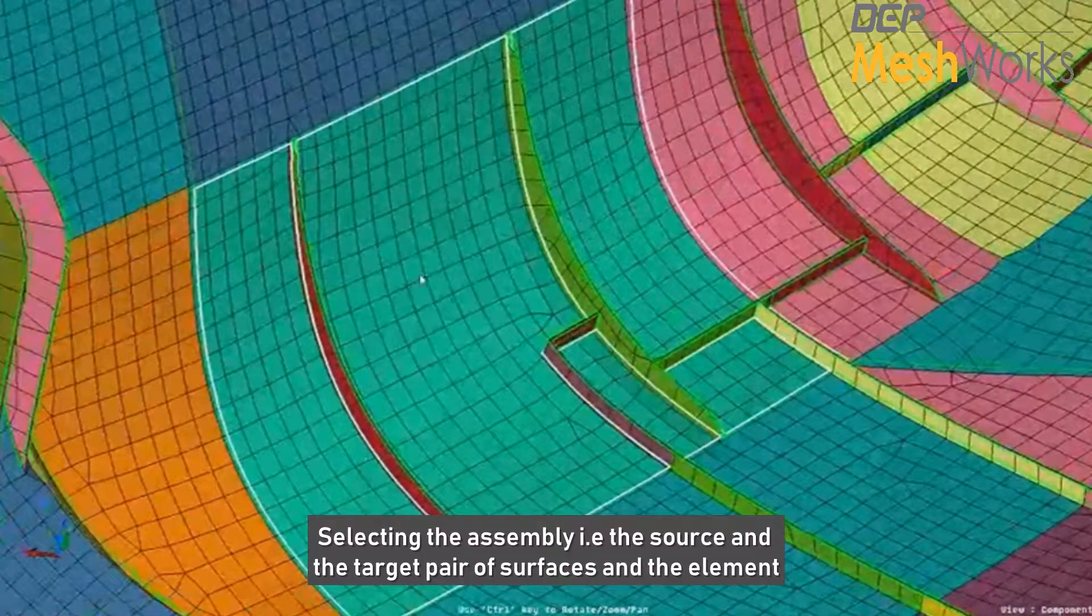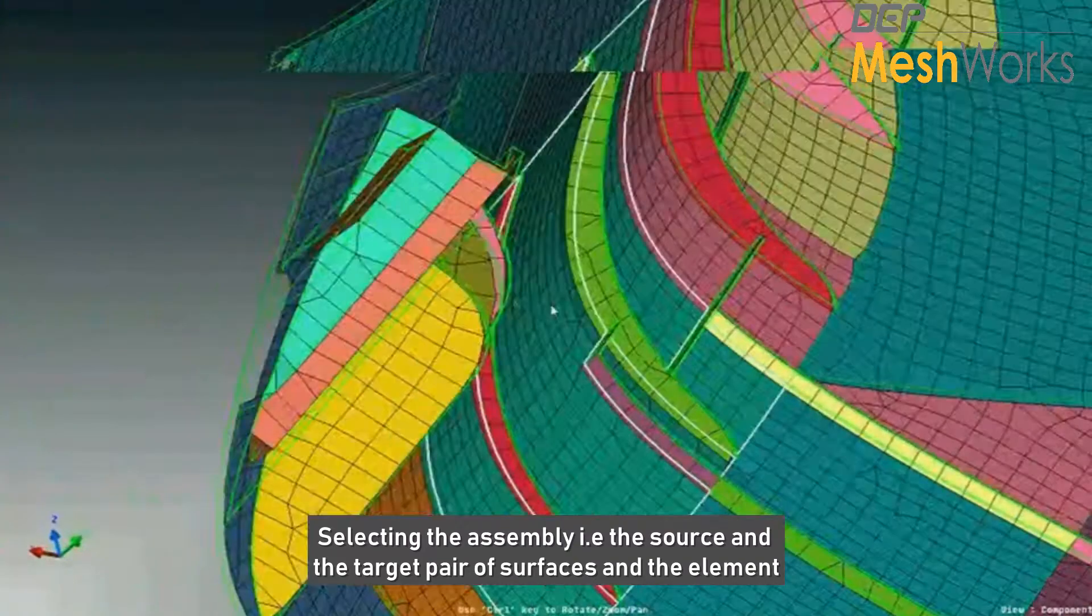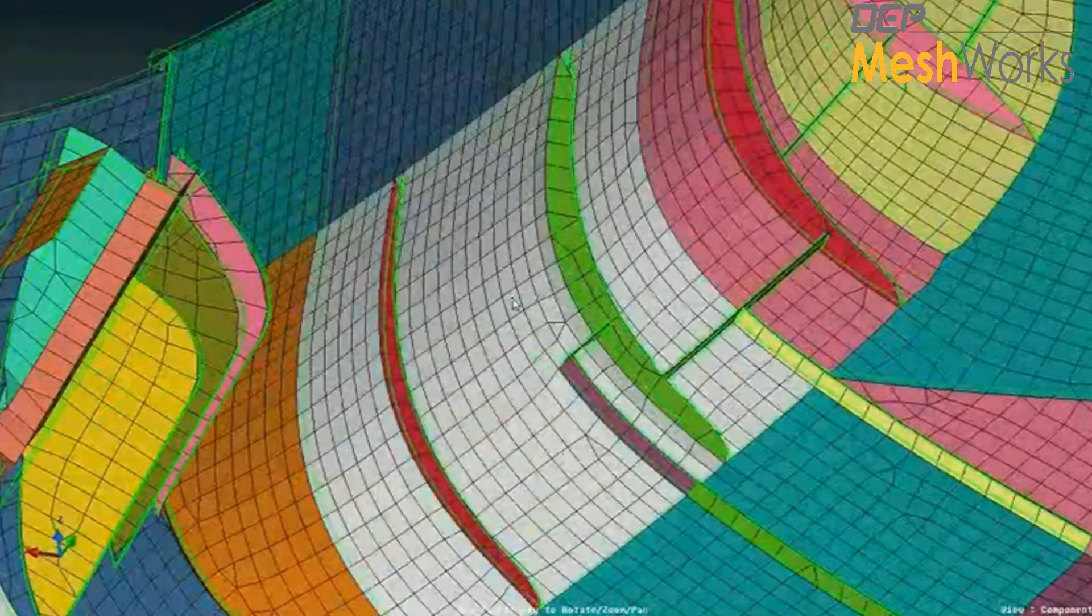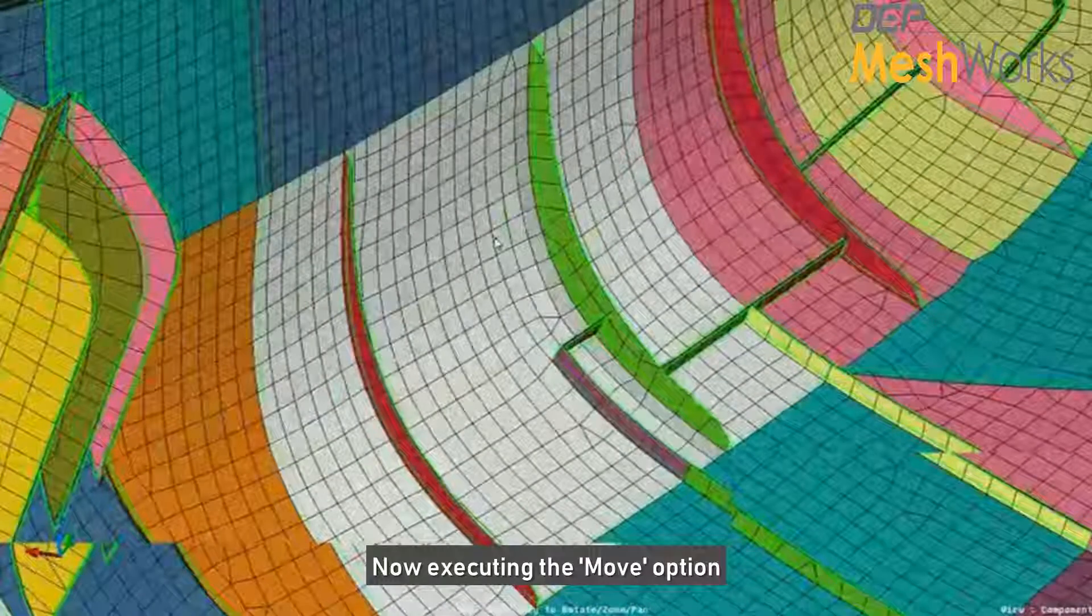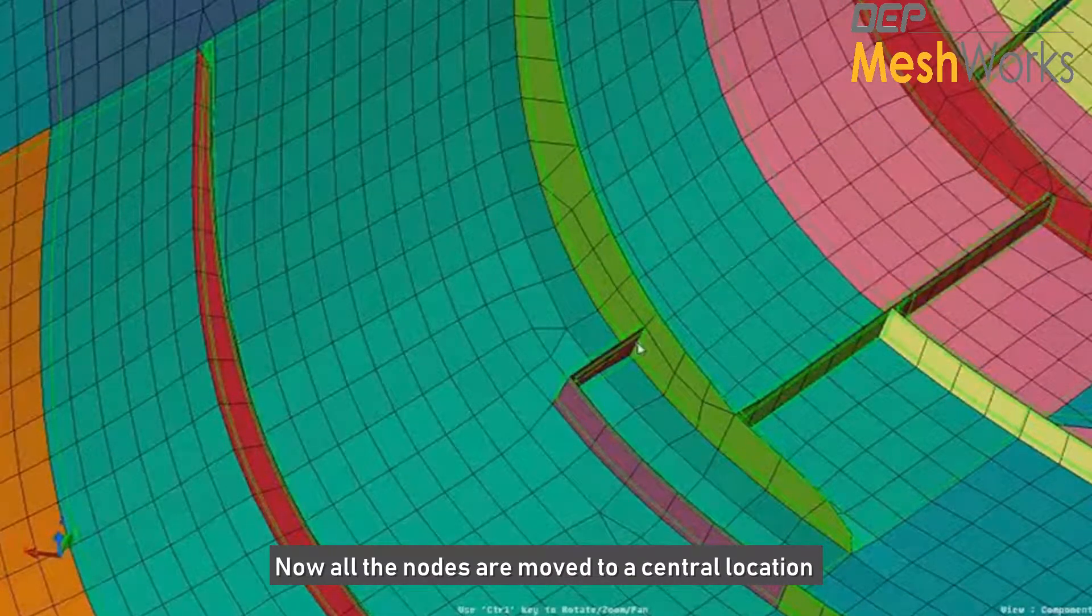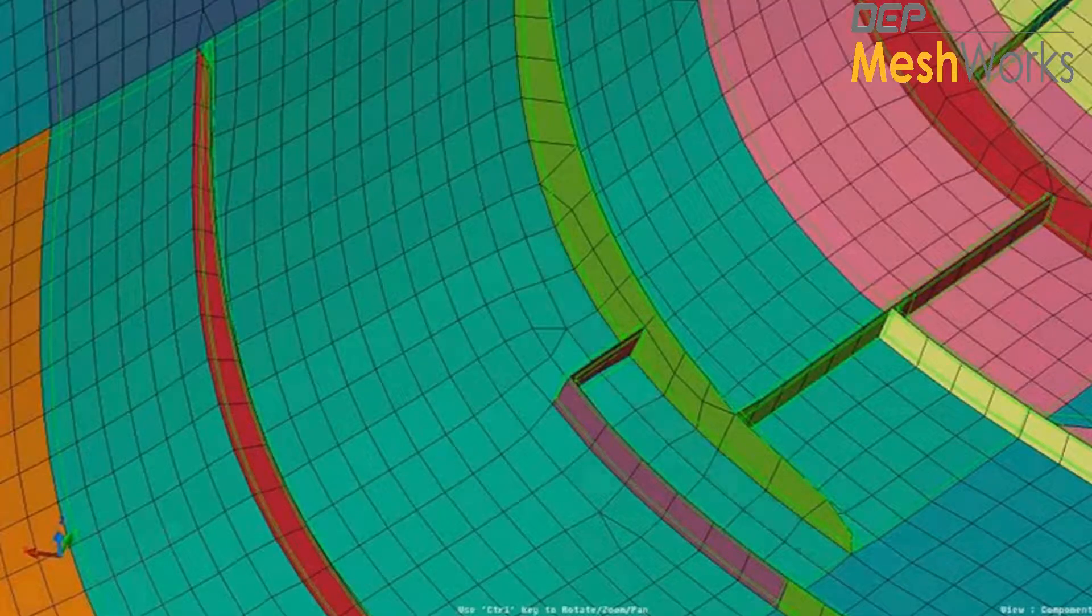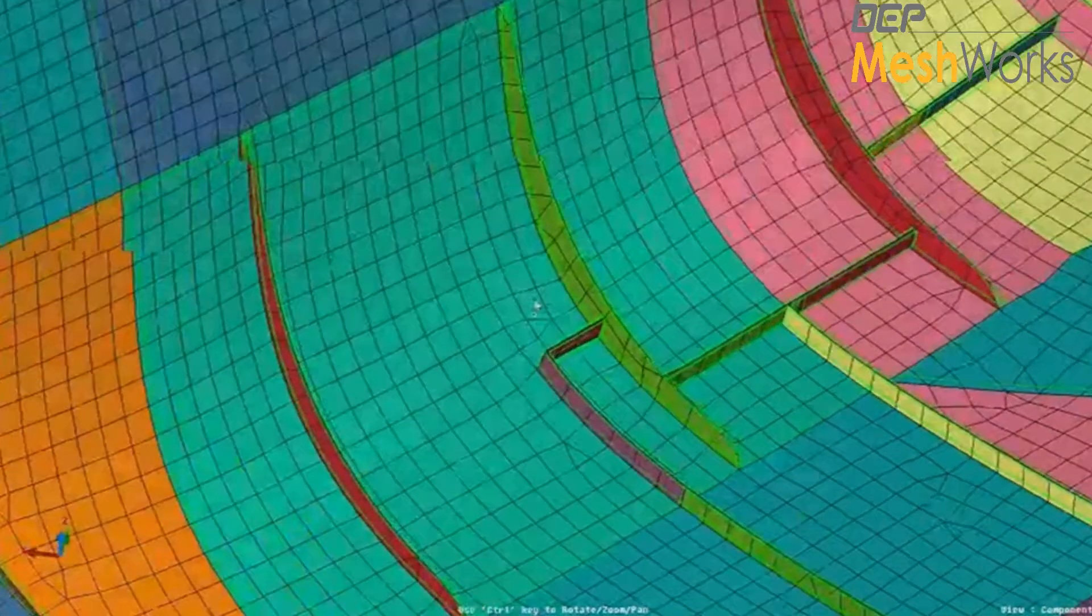So I'm just going to select the assembly. By assembly, I mean a source and target pair of surfaces and the elements, and say move. So all the nodes have been moved to the central location. I'm just going to change the color, and that's it.